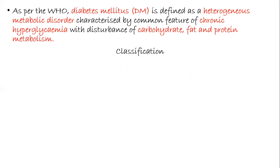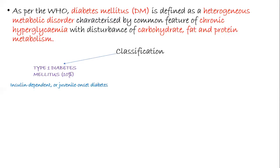The World Health Organization classifies diabetes into four types. The first is type 1 diabetes mellitus, which constitutes about 10% of cases. In earlier days it was termed insulin-dependent or juvenile-onset diabetes — juvenile-onset because it was predicted to occur at a very early age, and insulin-dependent because insulin was thought to be the ultimate treatment. But nowadays, both these terminologies are no longer used.